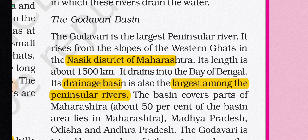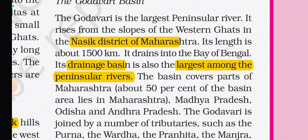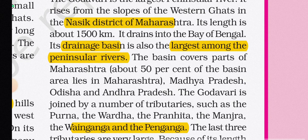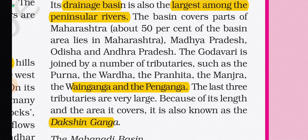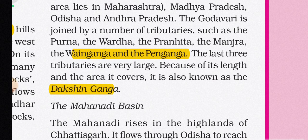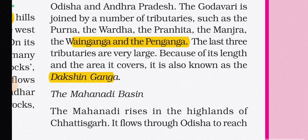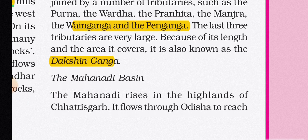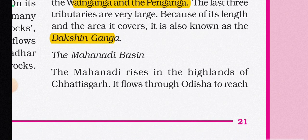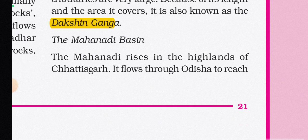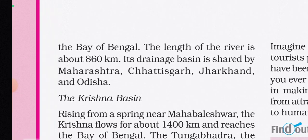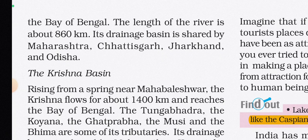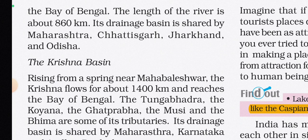The Godavari is the largest Peninsular river. It rises from the slopes of the Western Ghats in the Nasik district of Maharashtra. Its length is about 1500 km and it drains into the Bay of Bengal. The basin covers parts of Maharashtra (about 50%), Madhya Pradesh, Odisha, and Andhra Pradesh. The Godavari is joined by tributaries such as the Purna, Wardha, Pranhita, Manjra, Wainganga, and Penganga. Because of its length and the area it covers, it is also known as the Dakshin Ganga. The Mahanadi rises in the highlands of Chhattisgarh, flows through Odisha to the Bay of Bengal, with a length of about 860 km.